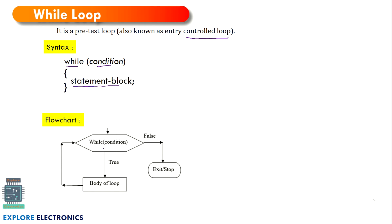This is the flowchart for while loop. The condition will be checked and if it is true, the body of the loop will be executed. After the execution of the body, the control will be given back to the condition. This is the loop that is created until the condition is true. Once the condition comes out to be false, the control will come out of this block and it will end.